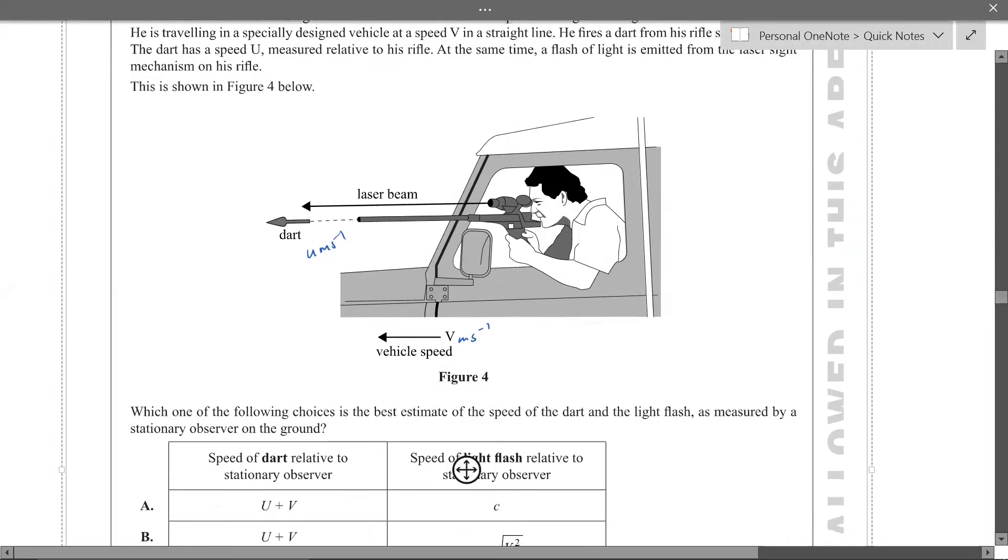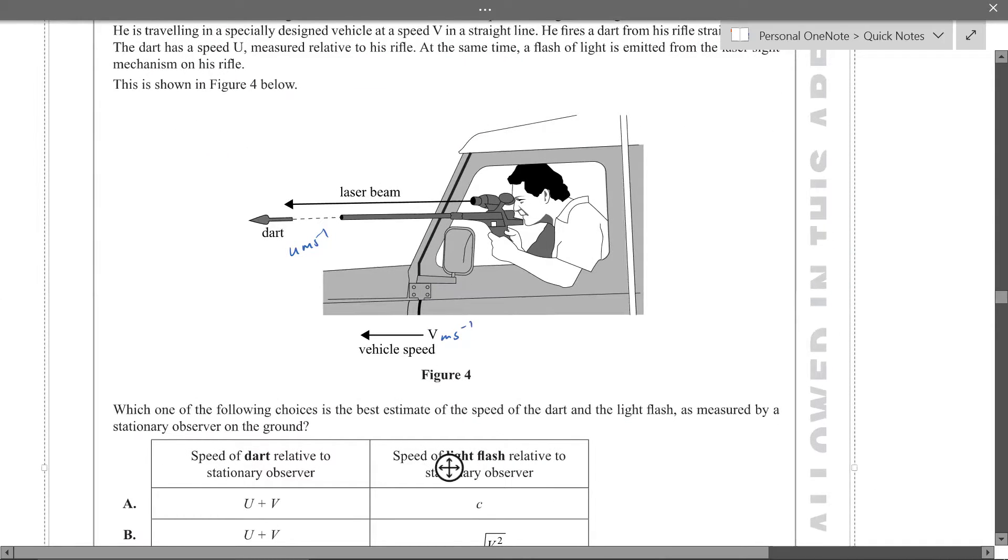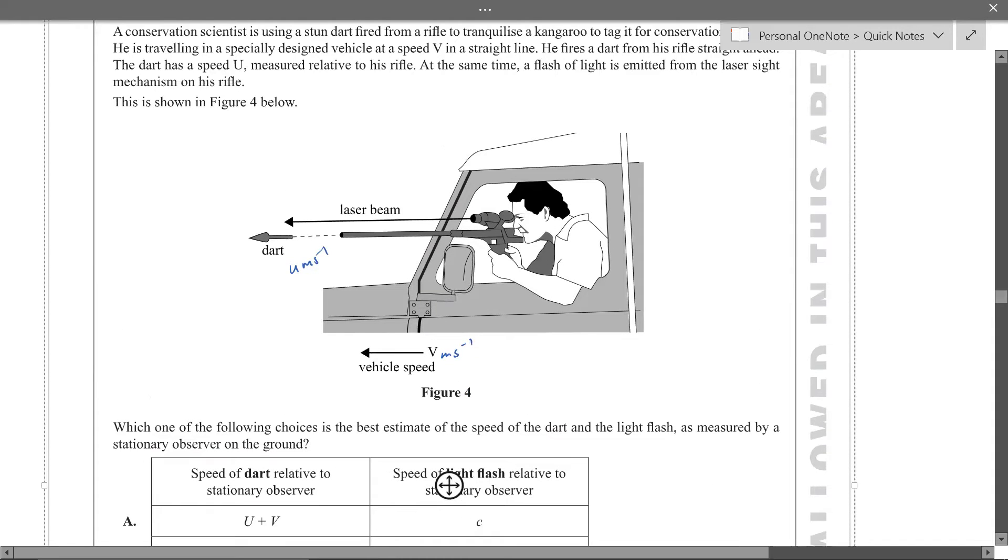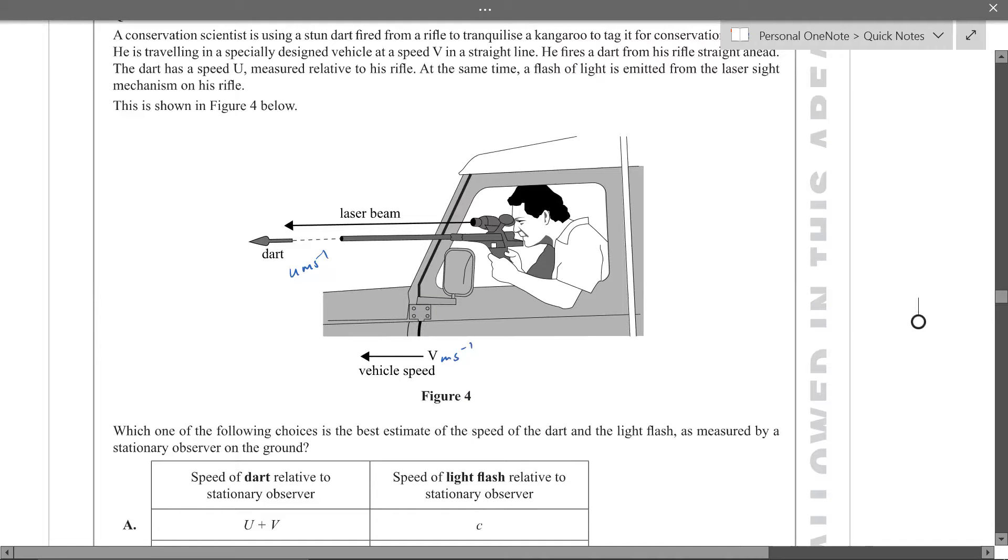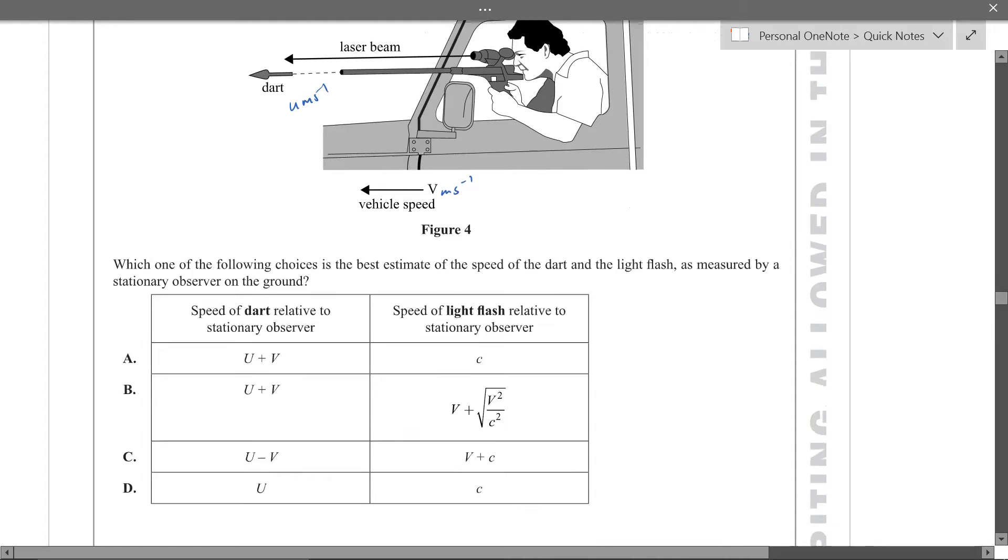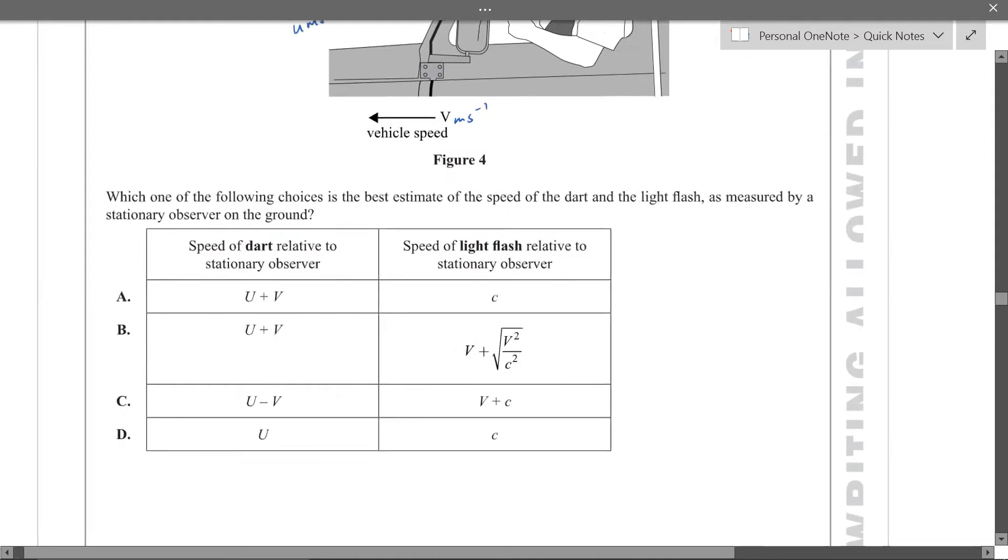So the beam's coming out at you relative to the vehicle. So that's not when it's still attached to the vehicle, it would be you. But when it comes out, it would be something else. So which of the following best estimates the speed of the dart and the light flash as measured by a stationary observer? So the easiest thing to look at would be this column. Speed of light is the same.